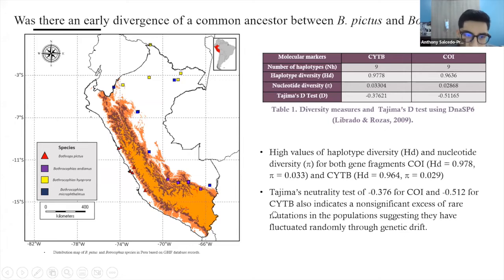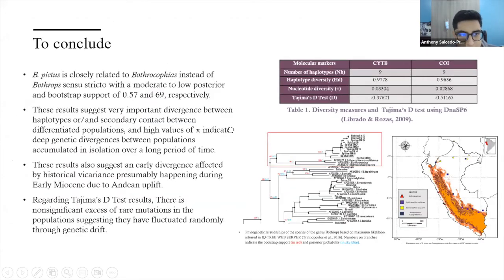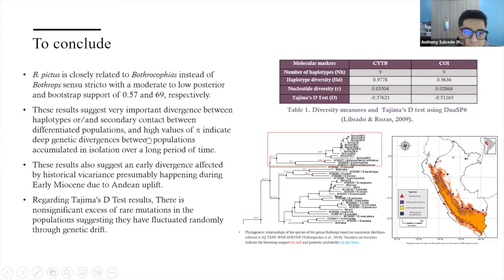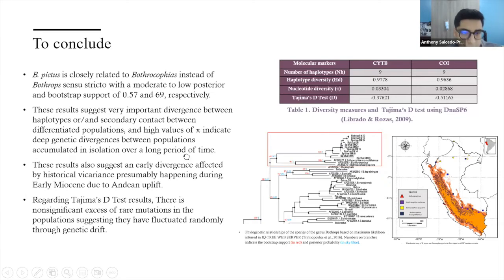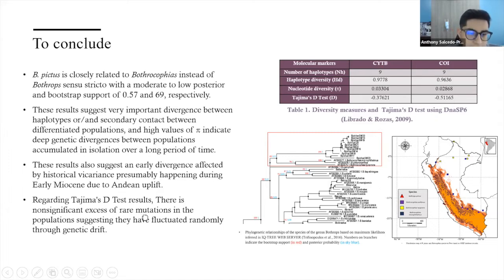To conclude: Bothrops pictus is clearly related to Bothrocophias instead of Bothrops sensu stricto, with a moderate to low posterior and bootstrap support of 0.57 and 69 respectively. The results suggest a very important divergence between haplotypes, or a secondary contact between differentiated populations. High values of nucleotide diversity indicate deep genetic divergences between populations accumulated in isolation over a long period of time. These results also suggest an early divergence affected by historical vicariance, presumably occurring during the early Miocene due to Andean uplift. Tajima's D results show no significant excess of rare mutations, suggesting populations have mutated randomly through genetic drift.